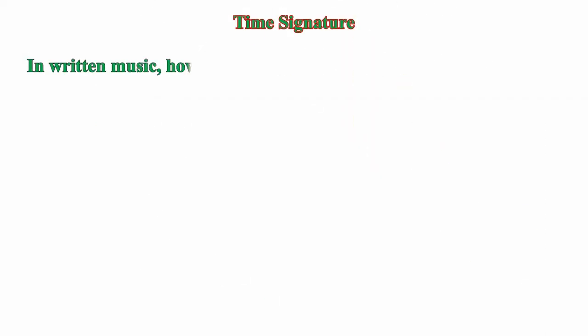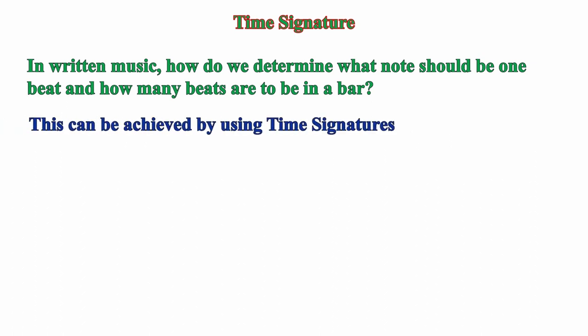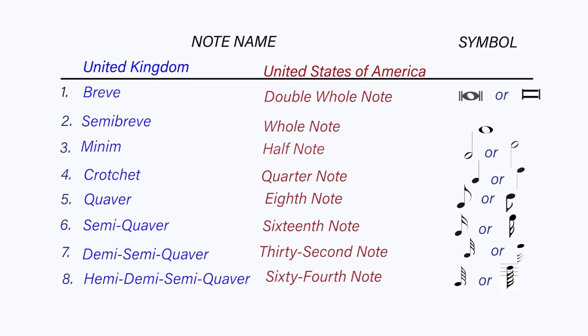How do we determine what note should be one beat and how many beats are to be in a bar? The music composer is given the latitude to let performers know exactly how this is to be done by using the symbol known as the time signature. This symbol is placed at the beginning of the staff. It announces in advance what to expect in terms of the number of beats in a measure and which note is to represent one beat. Recall that there are eight major types of notes, as learned in Lesson 11.